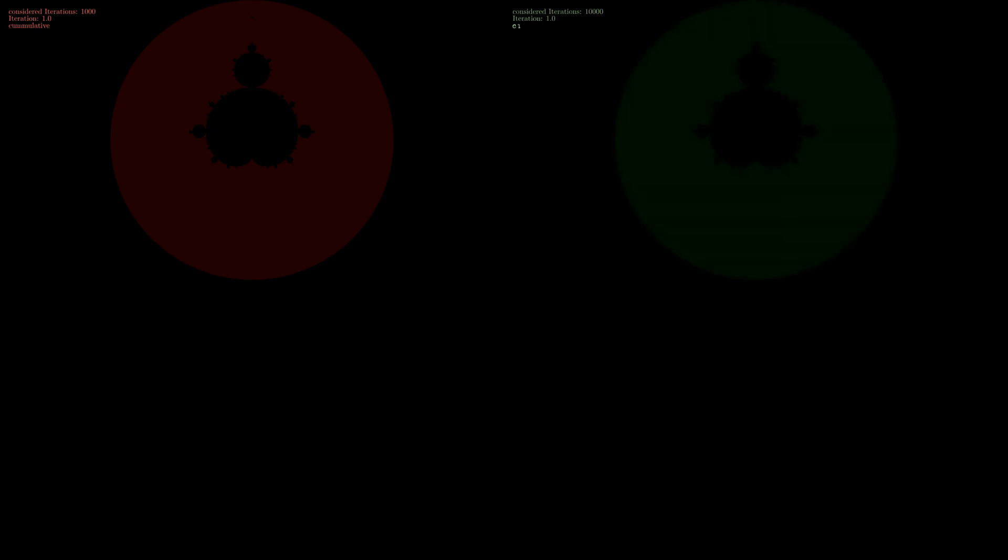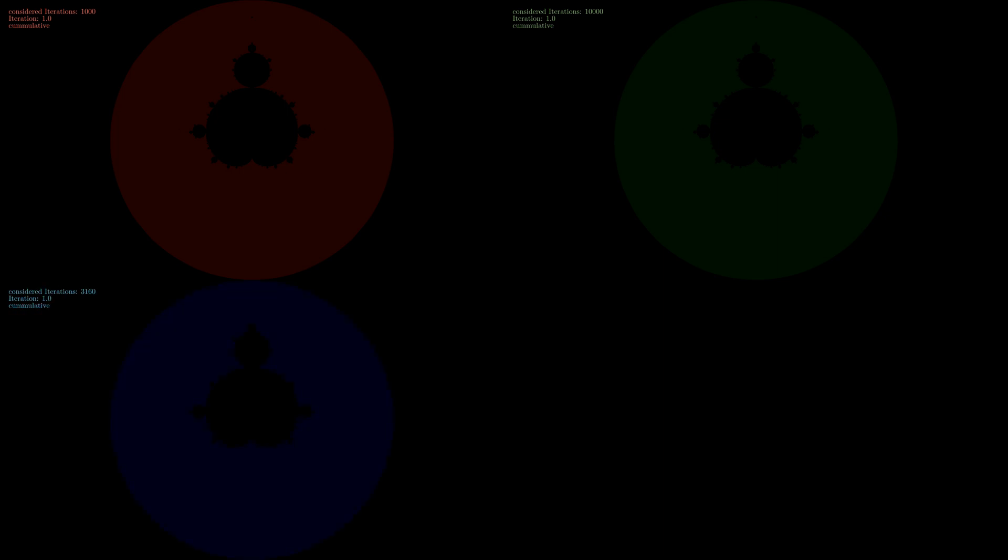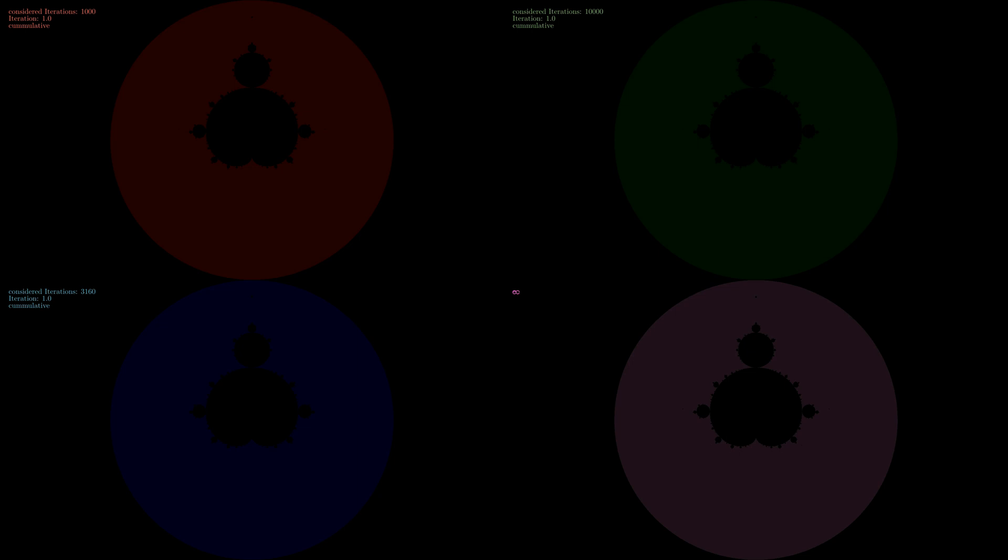To create that colorful Buddhabrot from the beginning of the video, we will create a red, a green, and a blue Buddhabrot. Since we will use different amounts of considered iterations for each Buddhabrot, they will all look slightly different on top of their different colors. At the bottom right, we will then combine these three Buddhabrots into one colorful Buddhabrot.